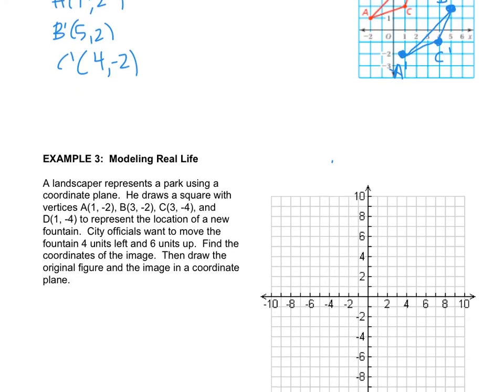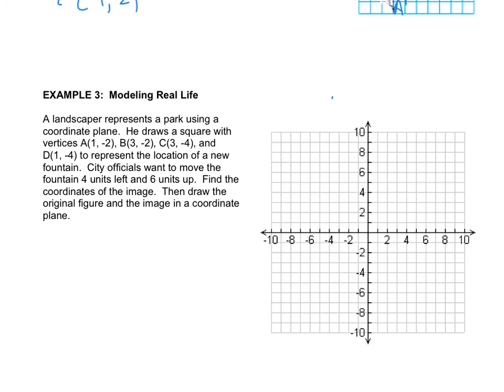A landscaper represents a park using the coordinate plane. He draws a square with these vertices to represent the location of the new fountain. City officials want to move the fountain, find the coordinates of the image, then draw the original figure and the image in the coordinate plane. So lots of things going on, but they did tell us the coordinates of the original square. So that's pretty straightforward. We can just pause the video right now and plot that park.